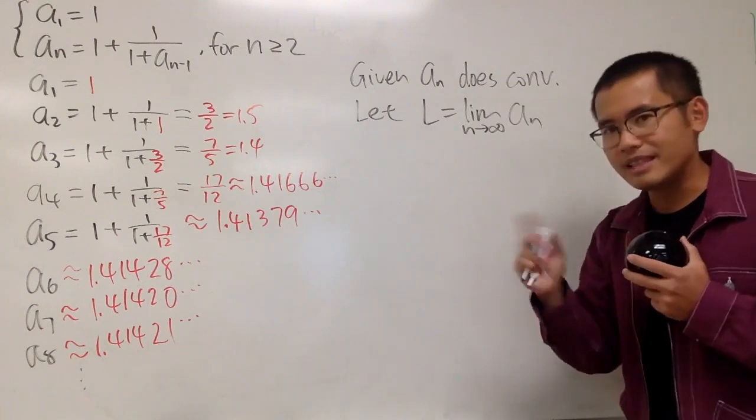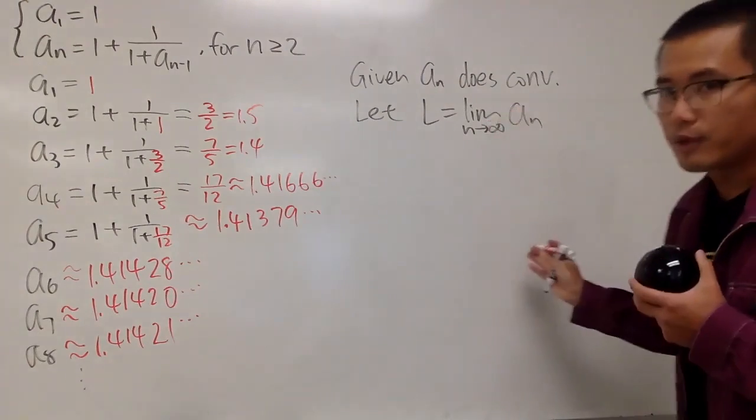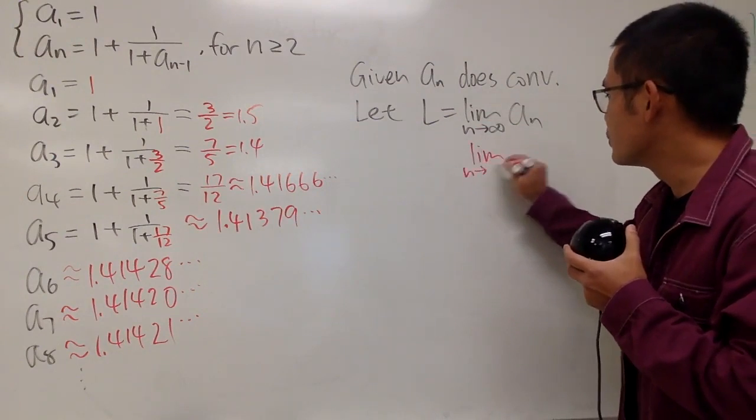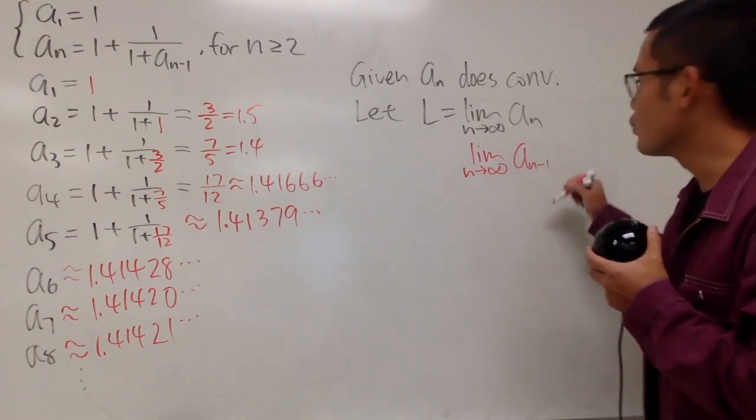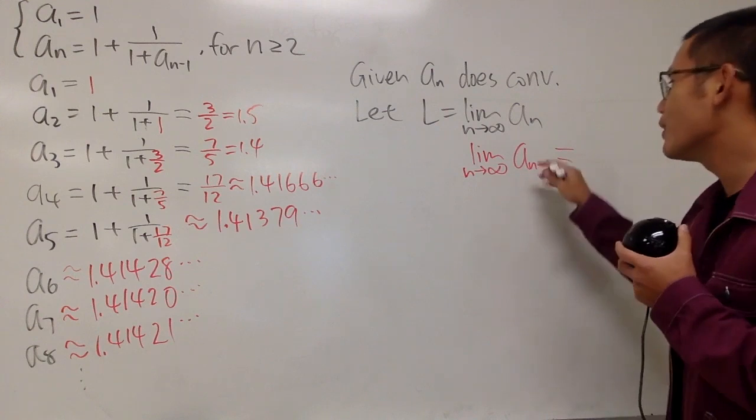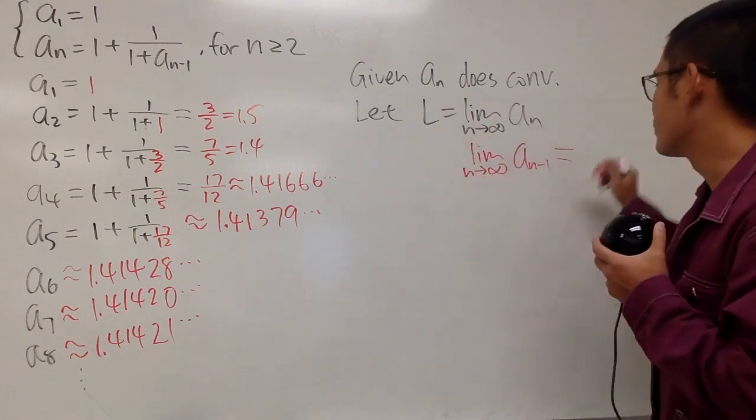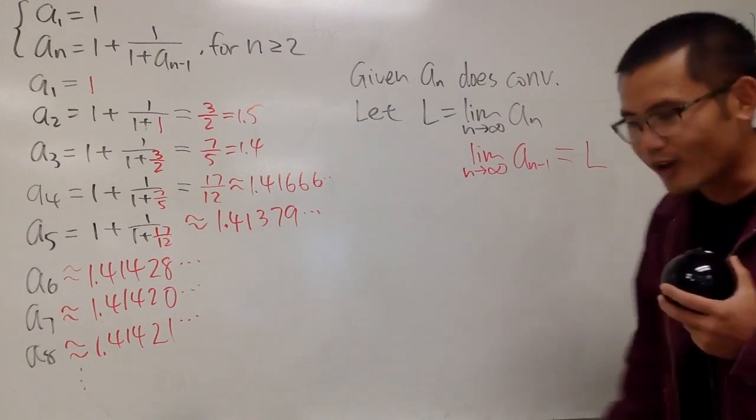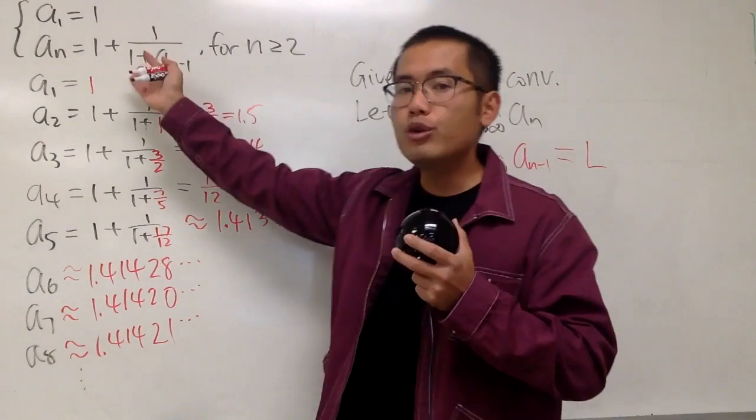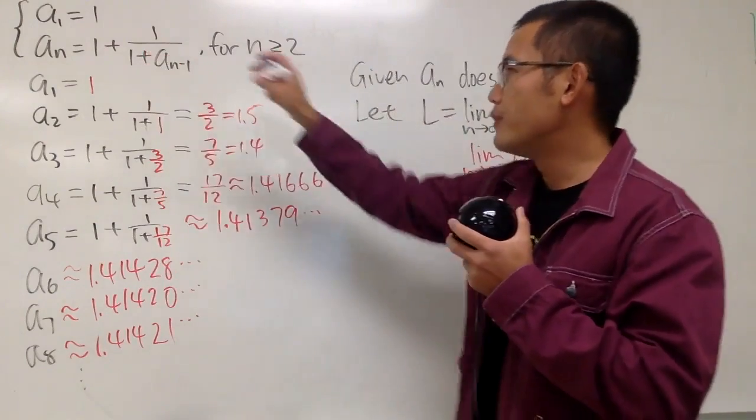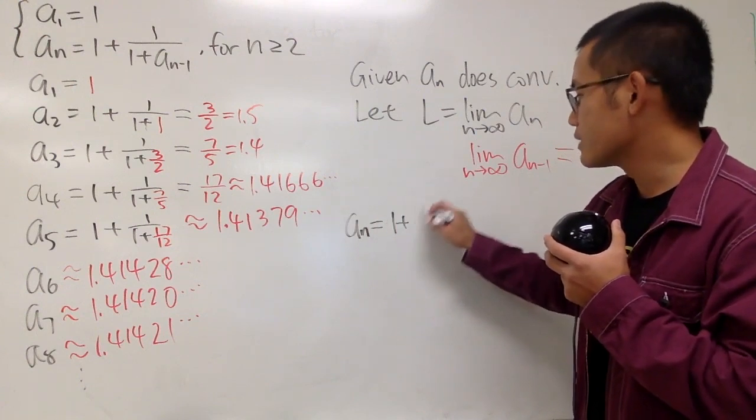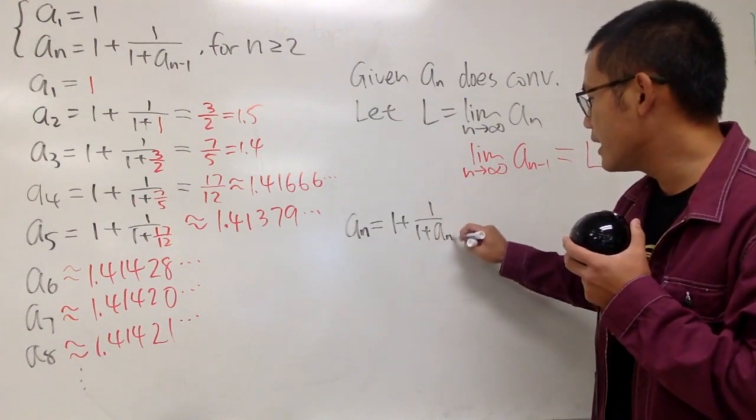And now, here is perhaps a slightly tricky part. If aₙ converges to L, well, what if we take the limit as n goes to infinity of aₙ₋₁? If you look at this, this is not just off by 1, but the idea is that, well, if aₙ goes to L, aₙ₋₁ will go to L as well. That's the idea. And the reason I bring this up is because we actually have to look back to our recursive formula, and from there, I will just write this down again.